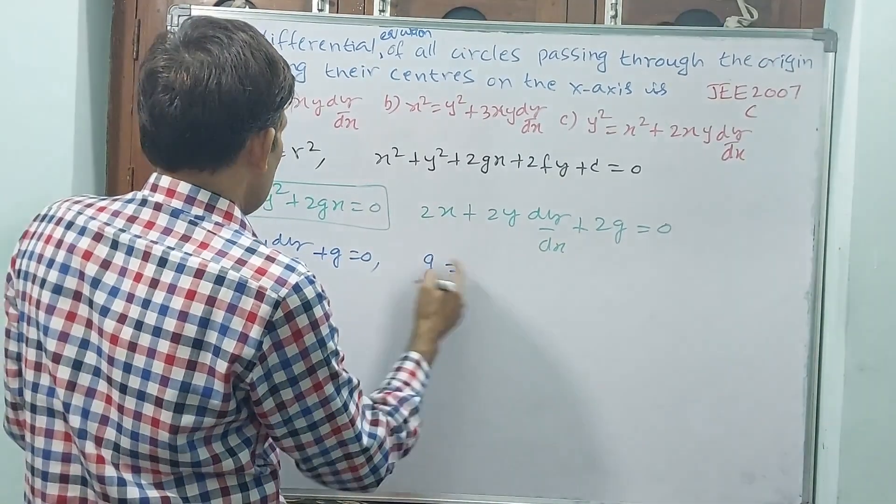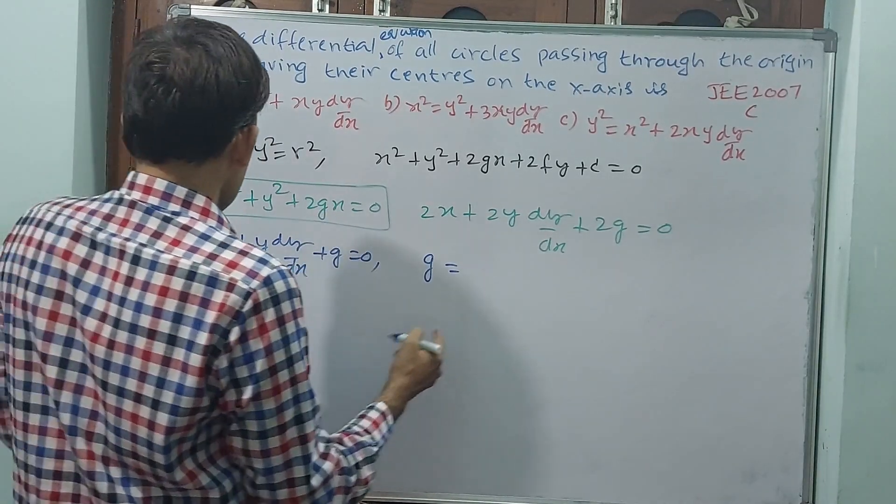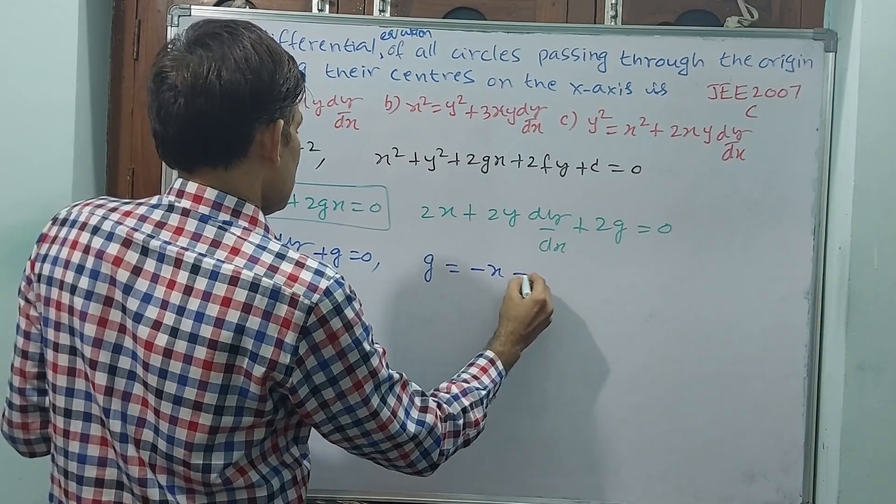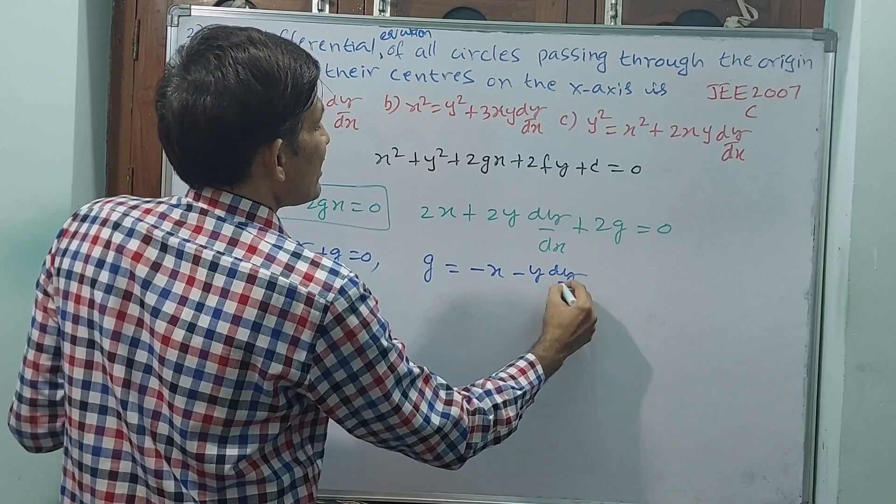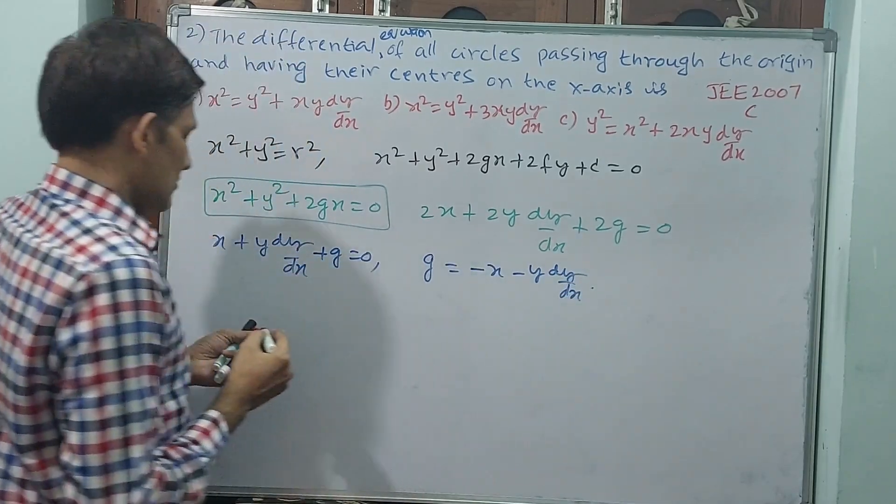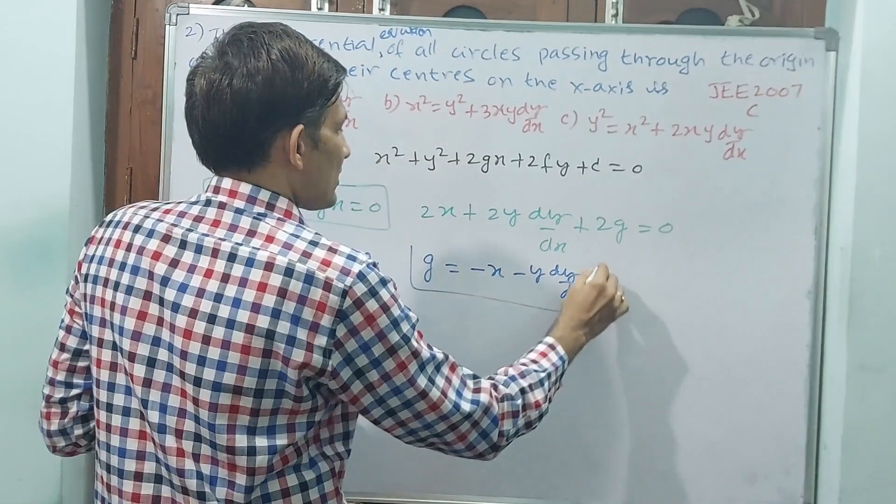Or else from this, I will take g value because I want to substitute g value here. g is minus x minus y dy/dx. Okay. This also I am boxing.